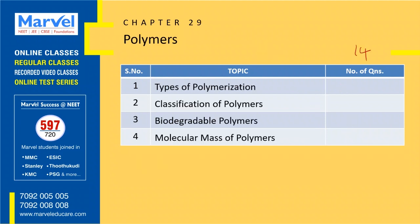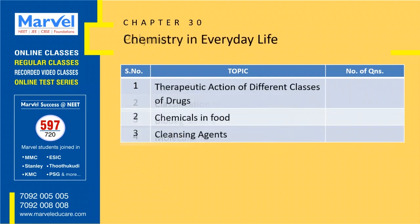Polymers: 14 questions from the last 8 years, expecting 1 or 2 questions. The first topic has 9 questions and the remaining topics have 5. Types of Polymerization is a key topic — study previous year questions for a clear picture of what types of questions appear. Last chapter: Chemistry in Everyday Life — 10 questions total, expecting 1 question. The first topic has 7 questions, and the other 2 topics have 3. The first topic is the strongest — the 2nd and 3rd topics are very rare.